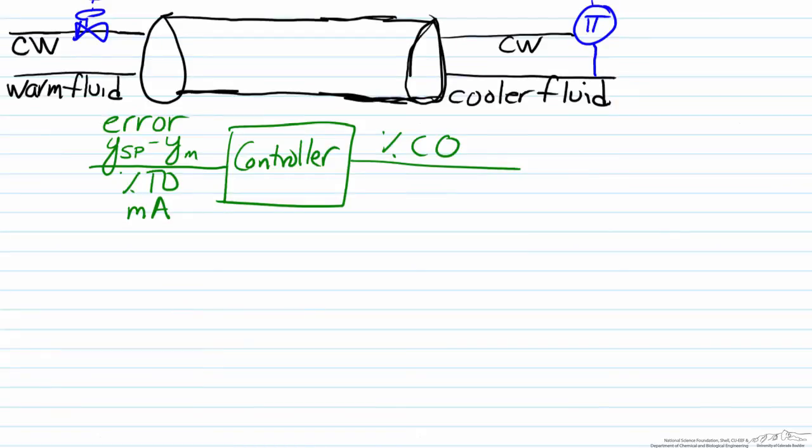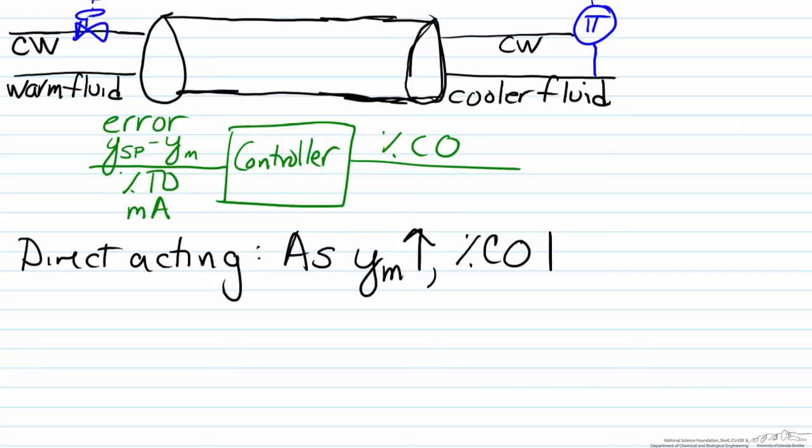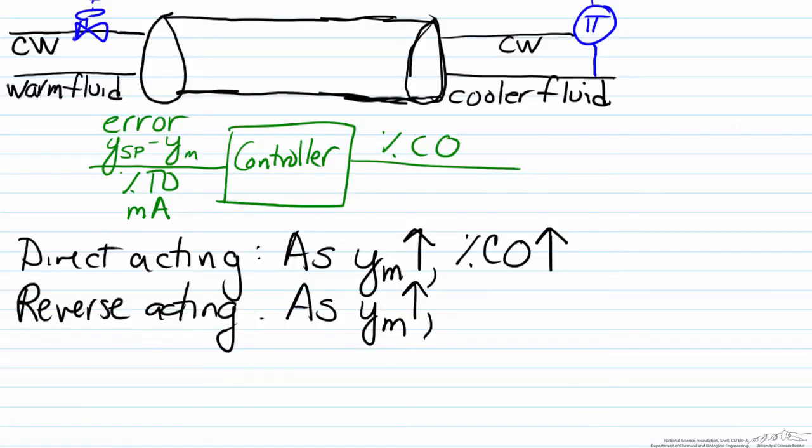Controller action can be reverse acting or direct acting. For a direct acting controller, as the value of the measured variable goes up, the percent controller output that the controller will make will go up, as the name direct acting indicates. The other type of controller action is reverse acting. Unsurprisingly, as the measured variable goes up, the percent controller output goes down.